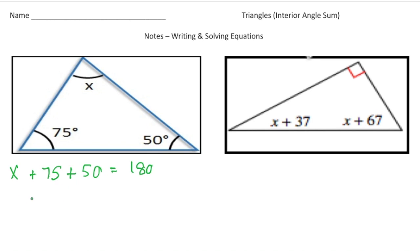And now let me simplify the left-hand side. So it's going to be x plus 125 equals 180. Now when I take away 125 from both sides, x ends up being 55. So 55 degrees is the value of x. I'm going to put a 55 up here.